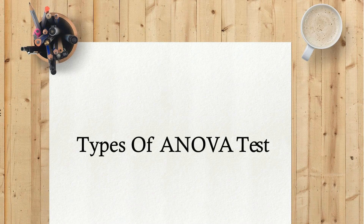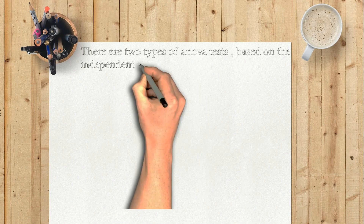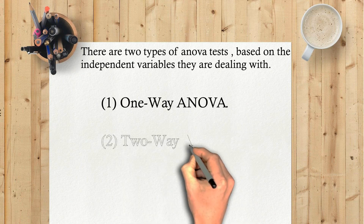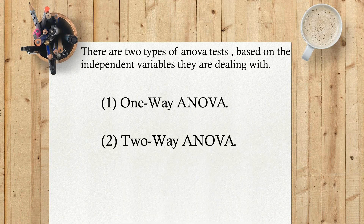Types of ANOVA test. There are two types of ANOVA tests based on the independent variables they are dealing with: one, one-way ANOVA; two, two-way ANOVA.